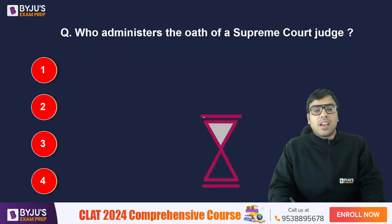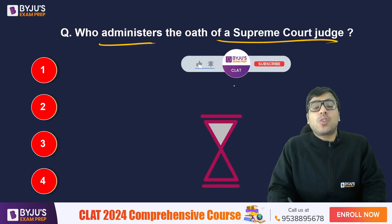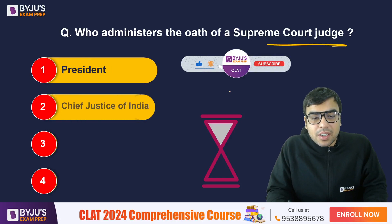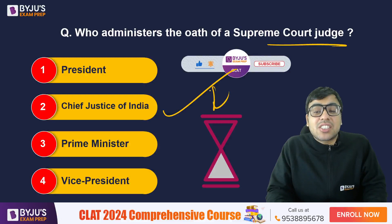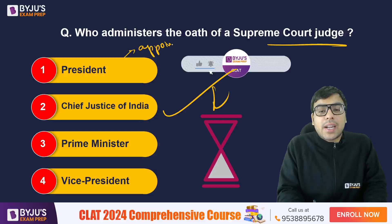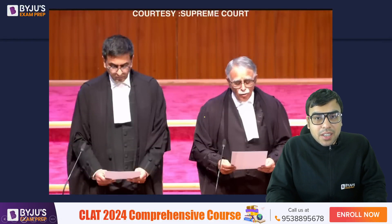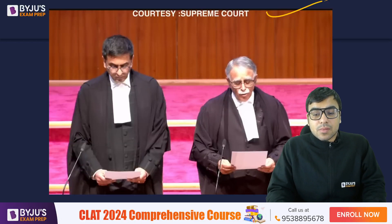Next question: Who administers the oath of a Supreme Court judge? Options are: A) President, B) Chief Justice of India, C) Prime Minister of India, D) Vice President. The right answer is the Chief Justice of India. The President appoints the Supreme Court judge, but the oath is administered by the Chief Justice of India. If you have seen the live streaming done by the Supreme Court's website, you can see this clearly.